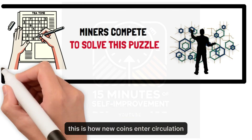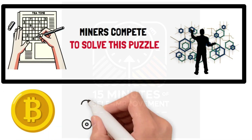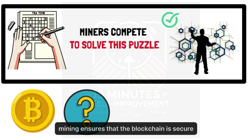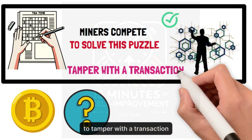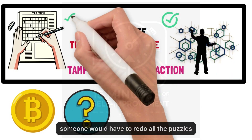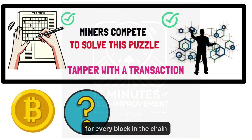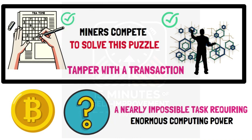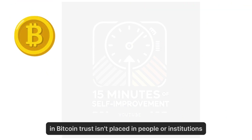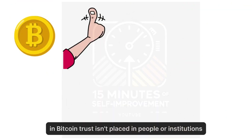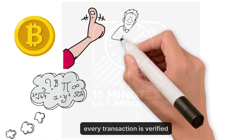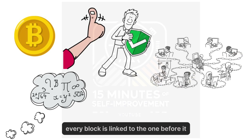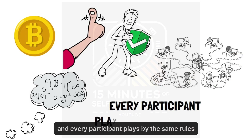But why does this process matter? Mining ensures that the blockchain is secure. To tamper with a transaction, someone would have to redo all the puzzles for every block in the chain — a nearly impossible task requiring enormous computing power. In Bitcoin, trust isn't placed in people or institutions; it's placed in math and cryptography. Every transaction is verified, every block is linked to the one before it, and every participant plays by the same rules.